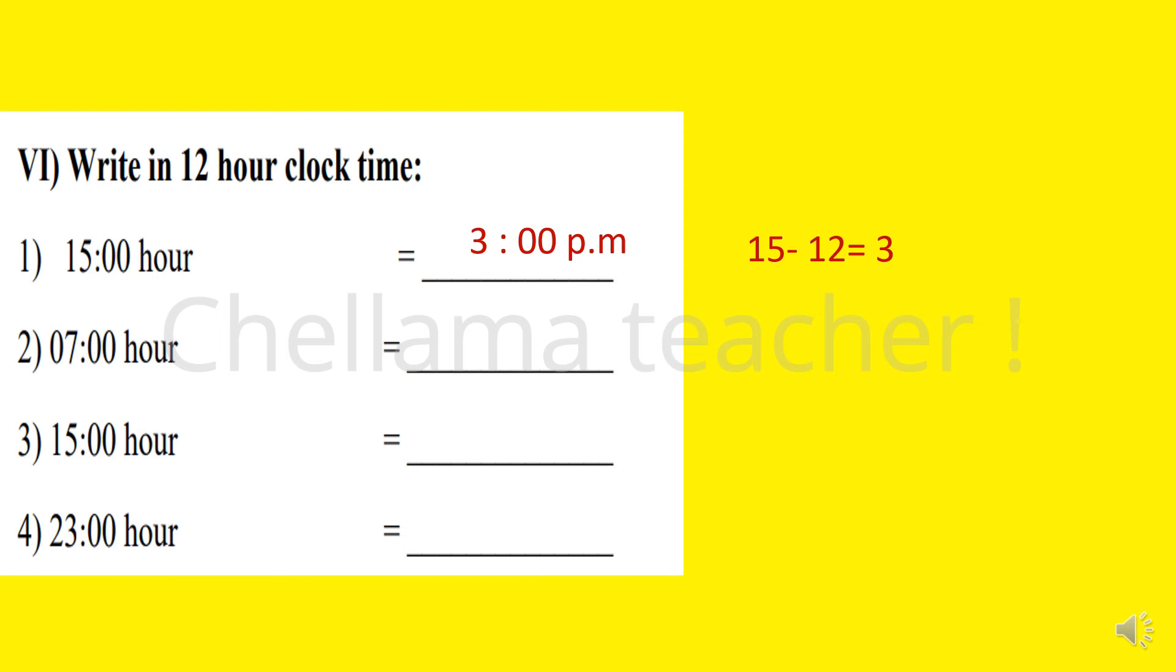Next question: 7 hour means it is before 12 noon, so it is simply 7 AM. 5 hour, same as the first question, it is not crossing 12 noon, so it is 5 AM.